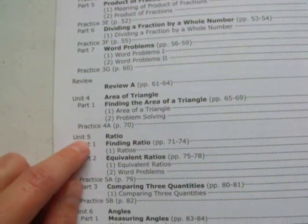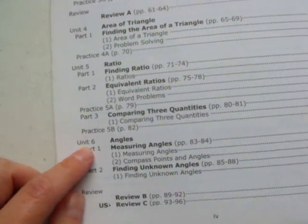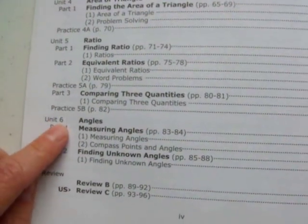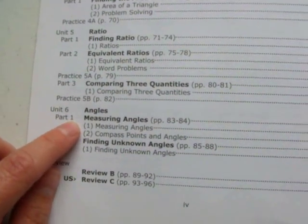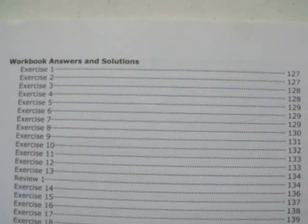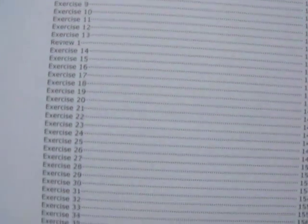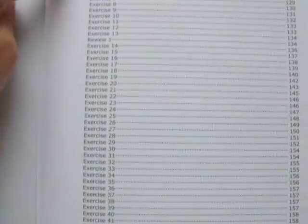Area of triangle. Ratio. Equivalent ratios. Comparing three quantities. Angles. So they'll be using protractors. Measuring angles. Compass points and angles. Finding unknown angles. And there's reviews. And also in the back of the book, it tells you what page number to find the workbook answers to all the exercises.